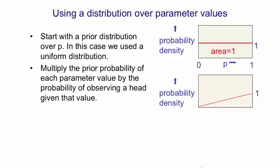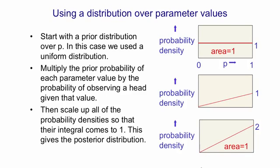It's unnormalized because the area under that line doesn't add up to 1. And of course, for a probability distribution, the probabilities of all the alternative events have to add to 1. So the last thing we do is we renormalize it. We scale everything up so the area under the curve is 1. And now, if we started with a uniform prior distribution over p, we end up with this triangular posterior distribution over p, having observed one head.